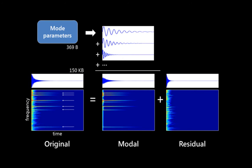We use the sinusoids associated with each mode and sum them up to obtain the modal component of the sound. Subtracting this from the original clip produces a residual that consists mostly of noise. The residual is often quite short and can be clipped, resulting in significant compression.